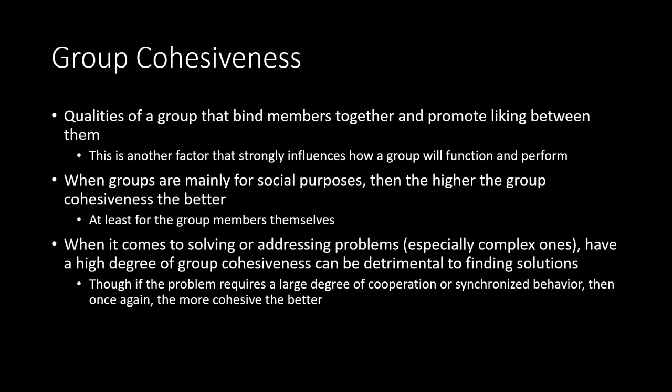Group cohesiveness refers to the qualities of a group that bind members together and promote liking among them, which strongly influences how well the group functions and performs. For social groups, higher cohesiveness generally means better outcomes for members — the more members like each other and fit well together, the better for their overall well-being. For groups built to solve complex problems, however, high cohesiveness can actually be detrimental to finding good solutions, and we will later discuss groupthink as one of the biggest detrimental factors.